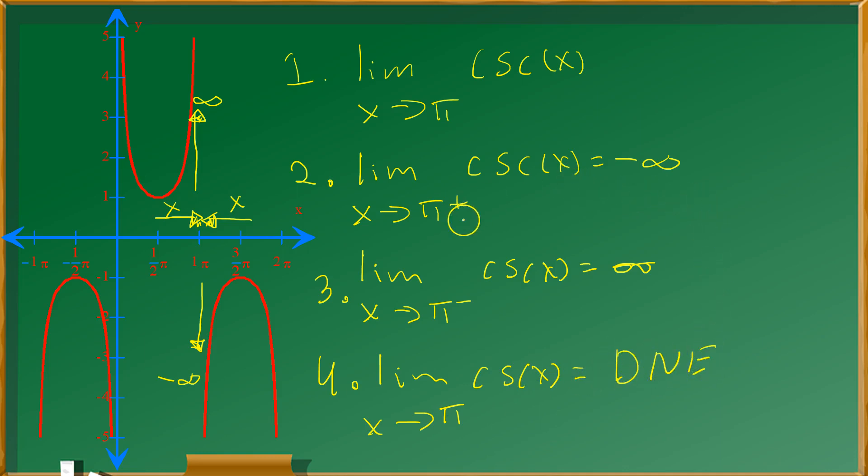You see that when you approach pi from the right, it goes towards negative infinity. When you approach pi from the left, it goes towards positive infinity. These two right here cannot be reconciled. So for that reason, the limit does not exist. And that's it.